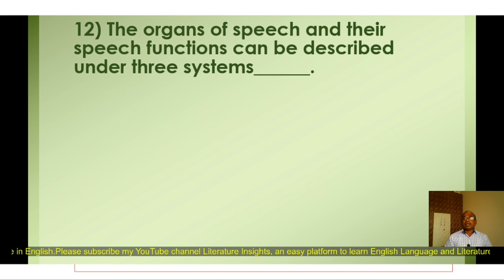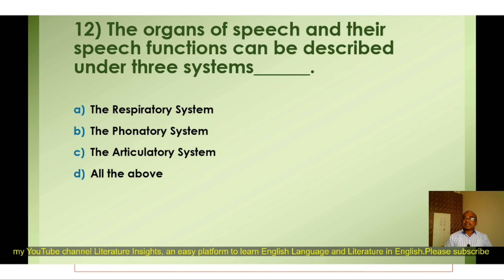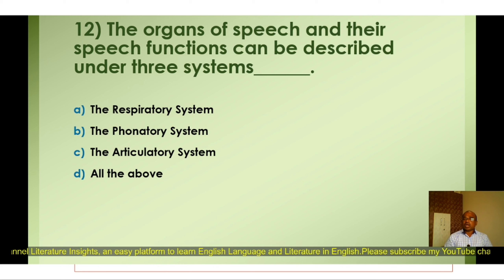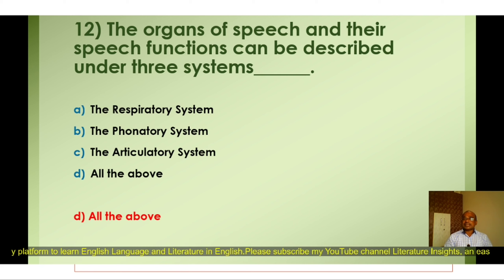Question number twelve: The organs of speech and their speech functioning can be described under three systems — A) The respiratory system, B) The phonatory system, C) The articulatory system, D) All the above. The correct option is D) All the above. The organs of speech and their speech functions can be described under three systems: the respiratory system, the phonatory system, and the articulatory system.